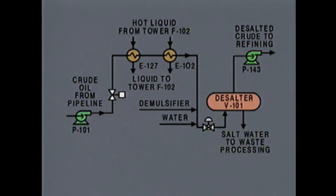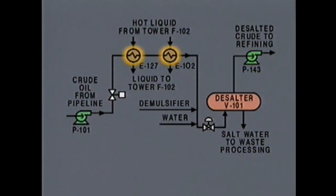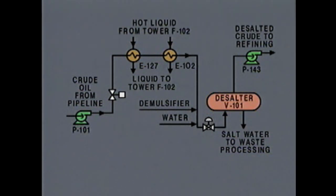Now that we've determined what comes into the system and what goes out, we're ready to look at the equipment that makes up the system. By looking at the diagram, we see that this system includes pumps, control valves, heat exchangers, and a vessel called a desalter. Using the diagram as a guide, we can locate the equipment in the plant by following the path that the oil takes through the desalter system.